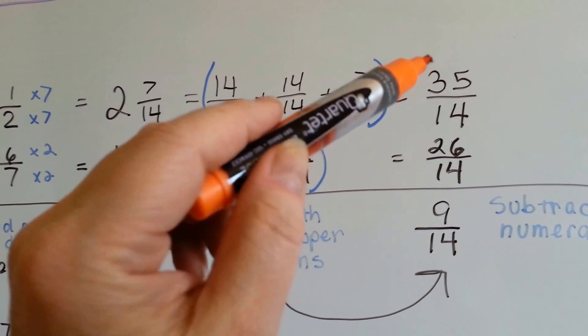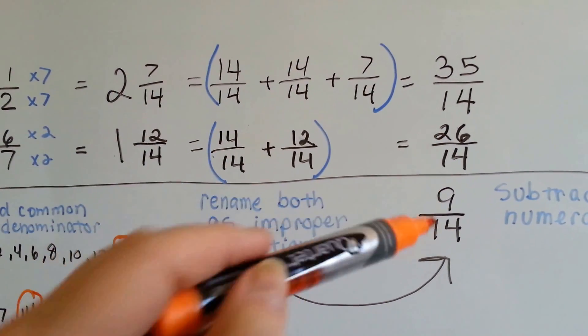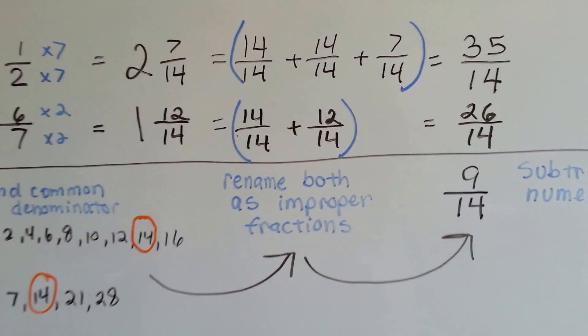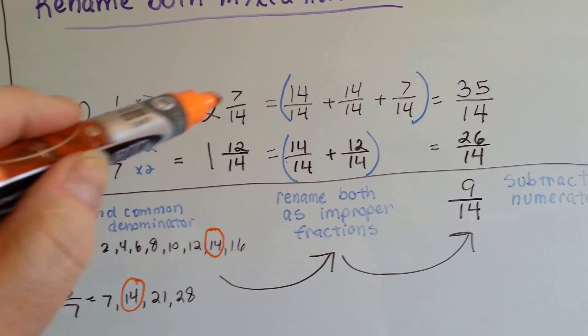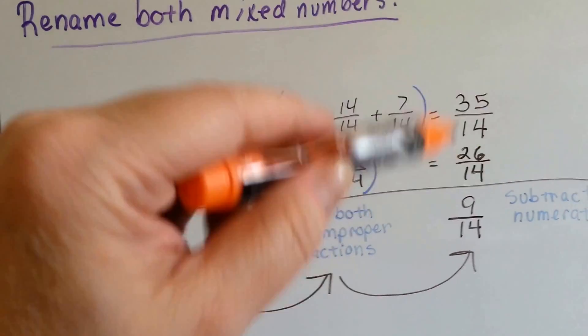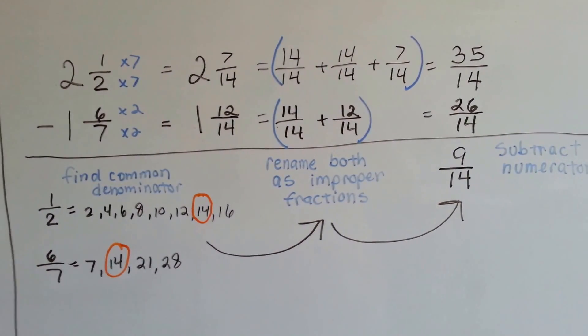Now we can take 35 and we can take the 26 away and get 9 fourteenths. See? So we ended up doing it to both numbers. We turned them all into just real big improper fractions. And then we subtracted the numerators.